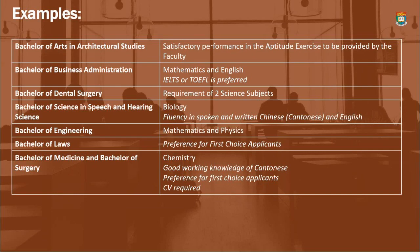In the case of Architectural Studies, you have to have a satisfactory performance in an aptitude exercise the faculty gives out after the application deadline. Some programs, like Speech and Hearing Science, have a preference for fluency in Chinese, as it's a program that works with people on Chinese speech patterns. Engineering always requires Mathematics and Physics — in IB terms, both at Higher Level; at A-level, Mathematics is required.